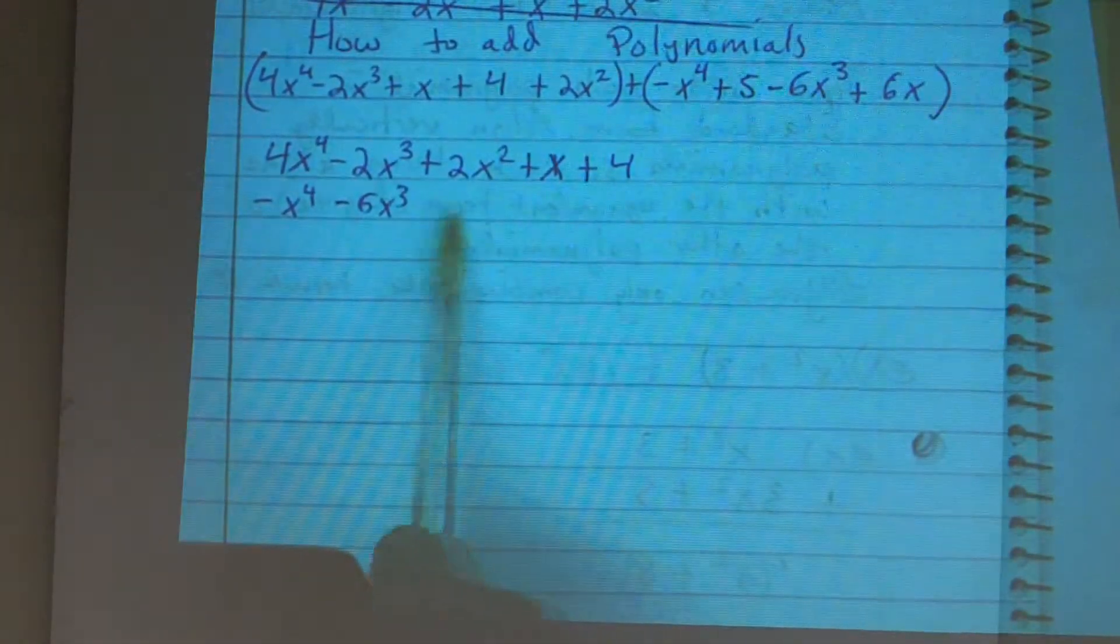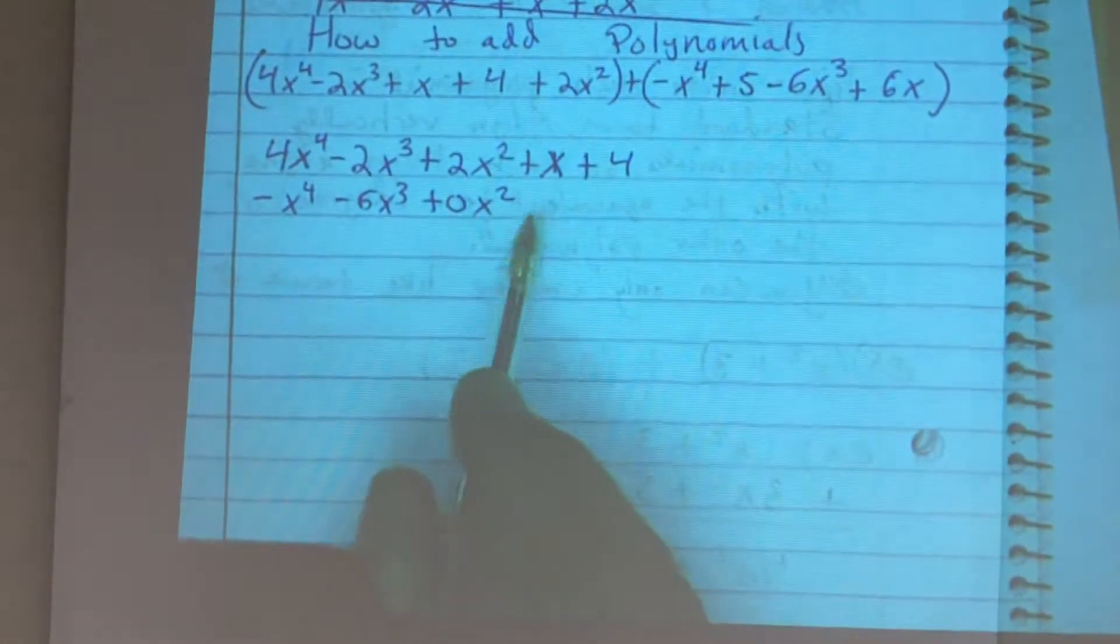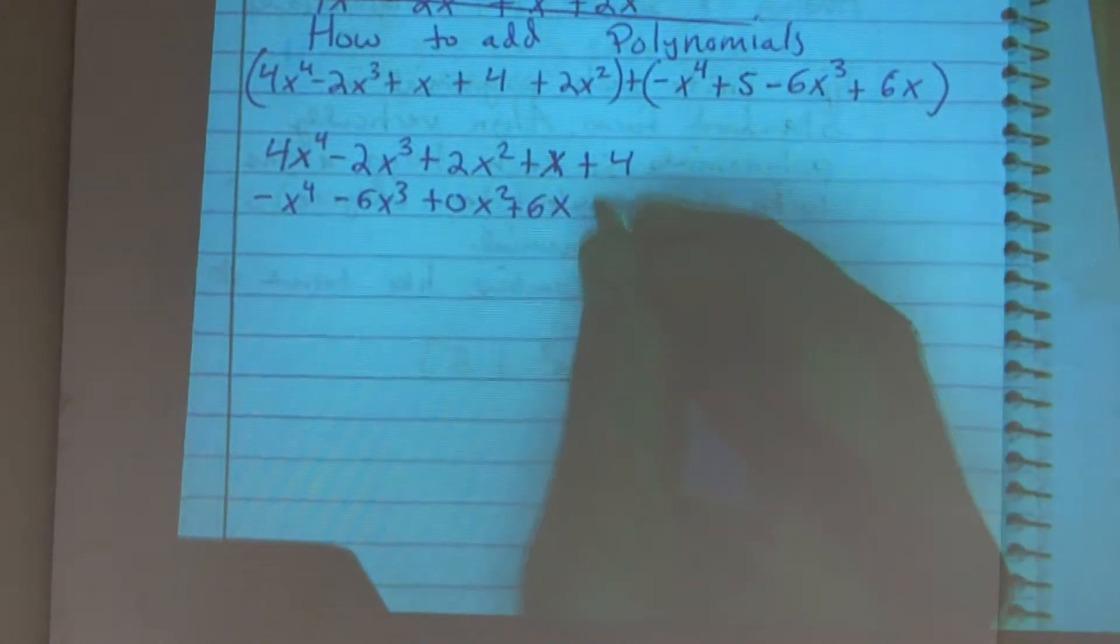So what I'm going to do, to still fill in this area, I'm going to put a 0x squared. Then for my x, I have a 6x, plus 6x, and then a plus 5.